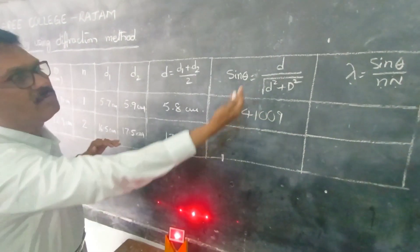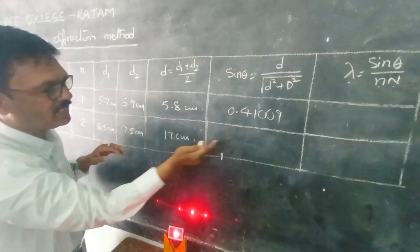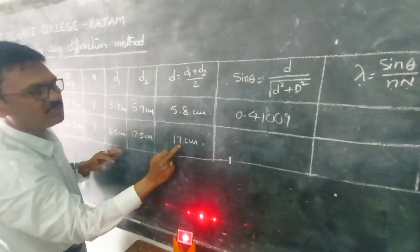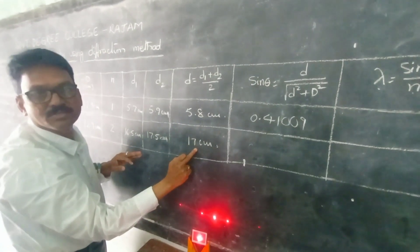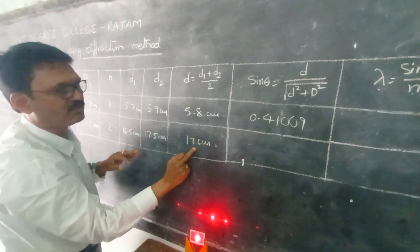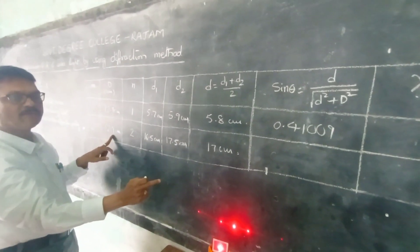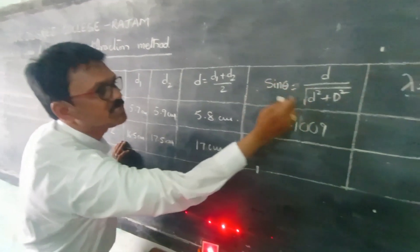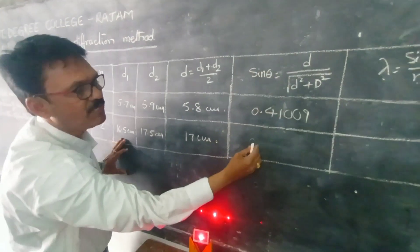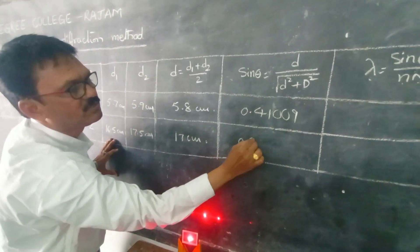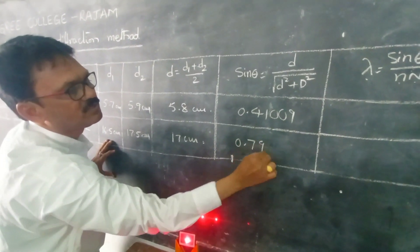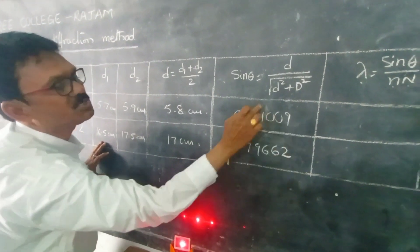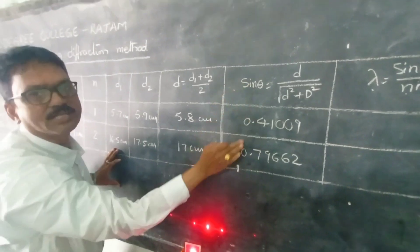For the second order, substituting d equal to 17.0 cm and capital D equal to 12.9 cm, the value of sin theta is 0.7962. These two are the sin theta values for first and second order respectively.